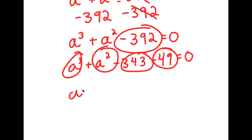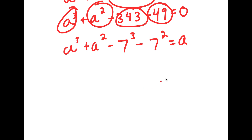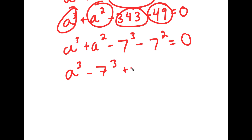I should rewrite 343 as 7 cubed and 49 as 7 squared. So we have a cubed plus a squared minus 7 cubed minus 7 squared equals zero. And now I'm going to change the order to group the cubes and then group the squares. So I have a to the power of 3 minus 7 to the power of 3, plus a squared minus 7 squared, is equal to zero.